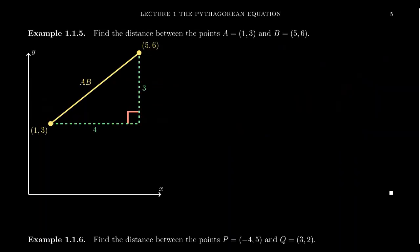So for example, let's find the distance between two points. Let's take the point A, which has coordinates 1, 3 in the plane, and let's take the point B, which has the coordinates 5, 6 in the plane. So you'll notice right here, my point A and my point B.